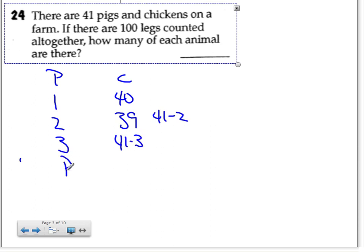So if I have P pigs, then it's going to be 41 minus P chickens. All right, so I have P pigs and 41 minus P chickens and together there are 100 legs.